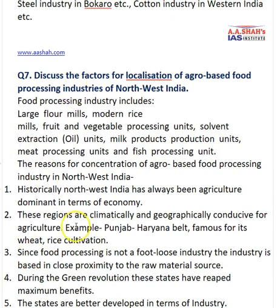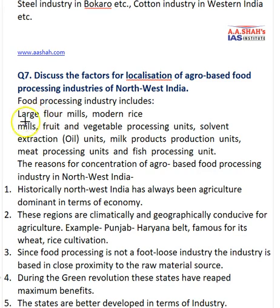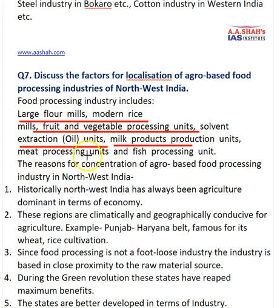The next question asked: discuss the factors for localization of agro-based food processing industries in North West India. For the introduction, this includes large flour mills, rice mills, fruit and vegetable processing industry, solvent extraction units, and milk product units. Agro-based processing includes bread, processed foods, processed fruits, and processed vegetables. North West India has been agriculturally dominated historically, and these regions are climatically and geographically conducive — for example, Punjab and Haryana, famous for grain production, and Western UP.